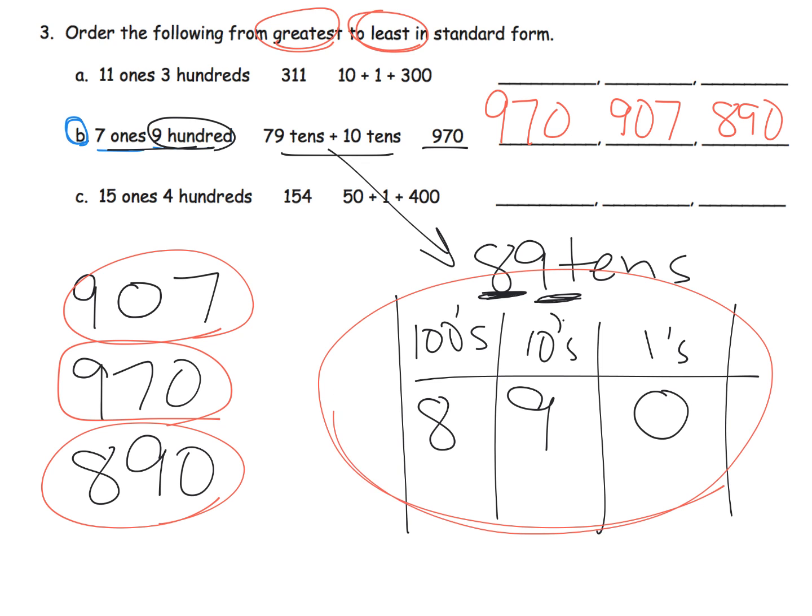And the least is eight hundred ninety. So we did all this work, and it turns out it's the least of the three numbers.